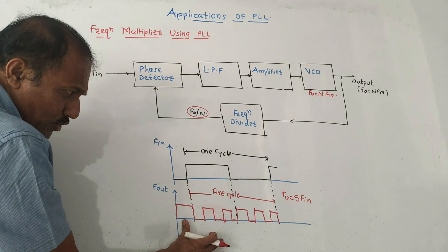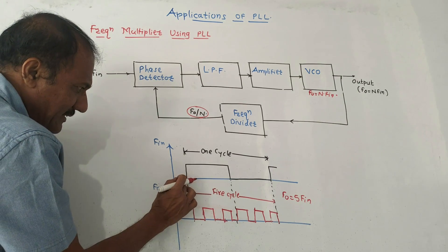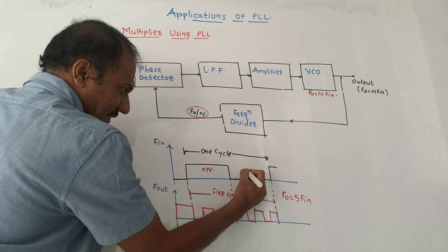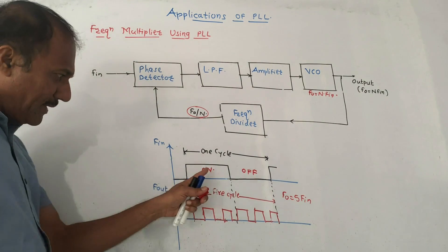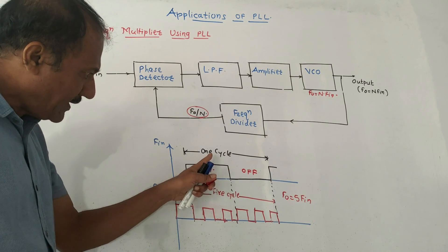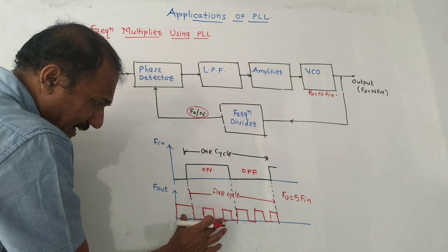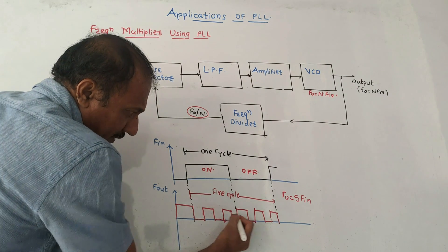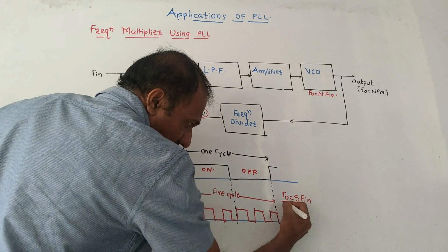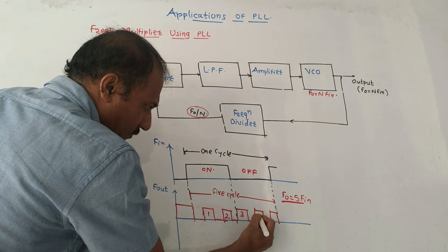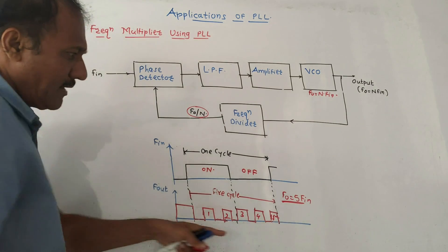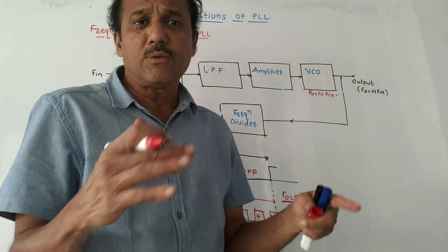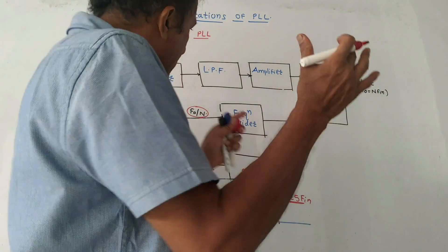This waveform shows the output of the frequency multiplier. This is Fn — we are considering one cycle, with an on-cycle and an off-cycle. The combination of on and off represents one complete cycle. As shown in this diagram, this is just one example: we are getting 5 output cycles for every 1 input cycle. That means F0 equals 5 times Fn. So the output frequency is multiplied by the integer value, in this case 5.